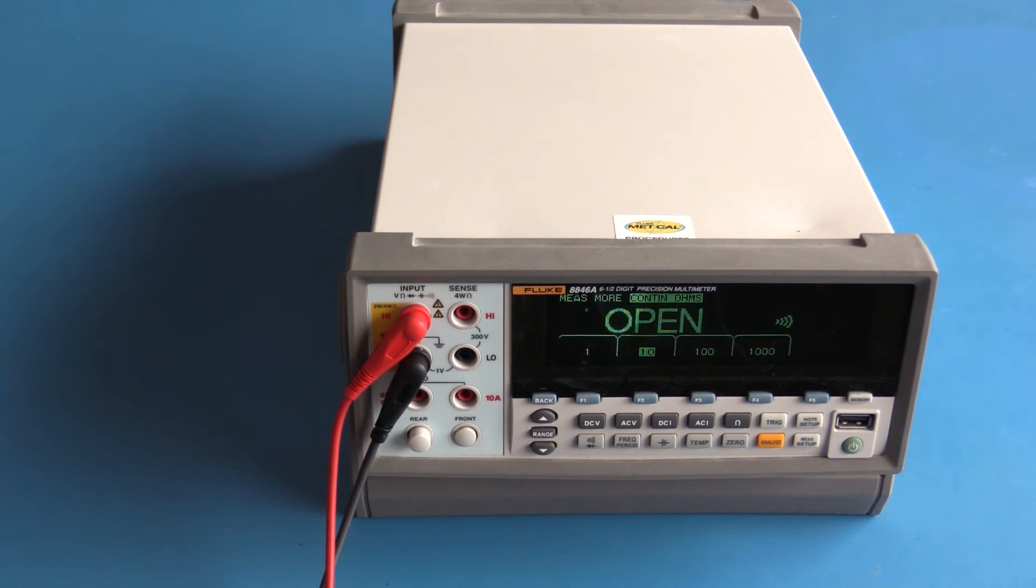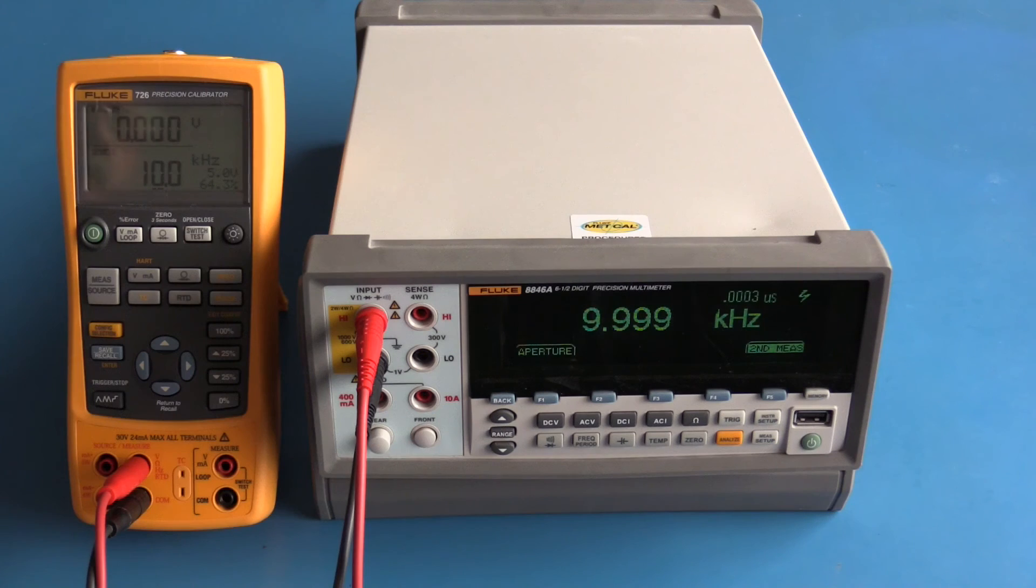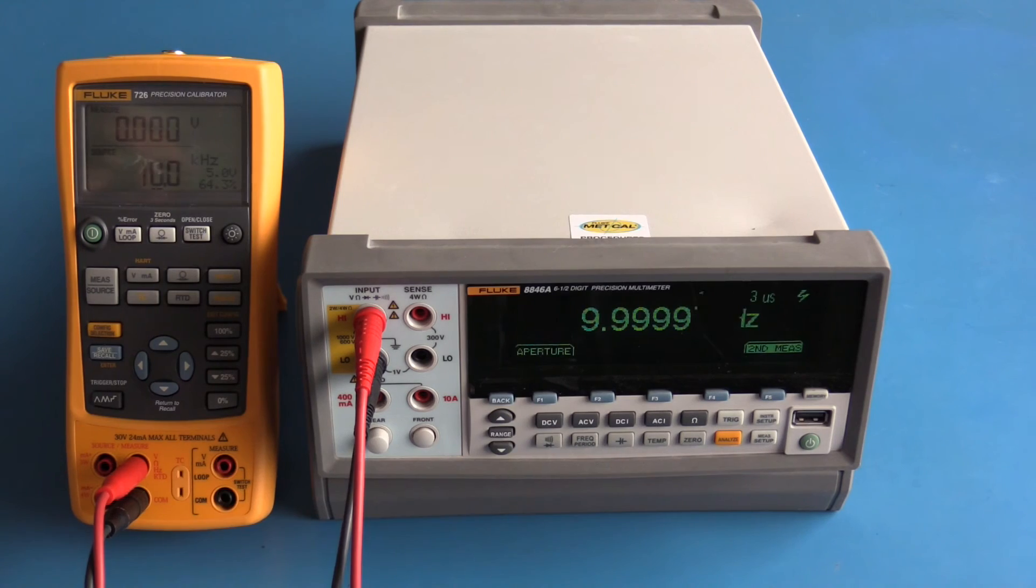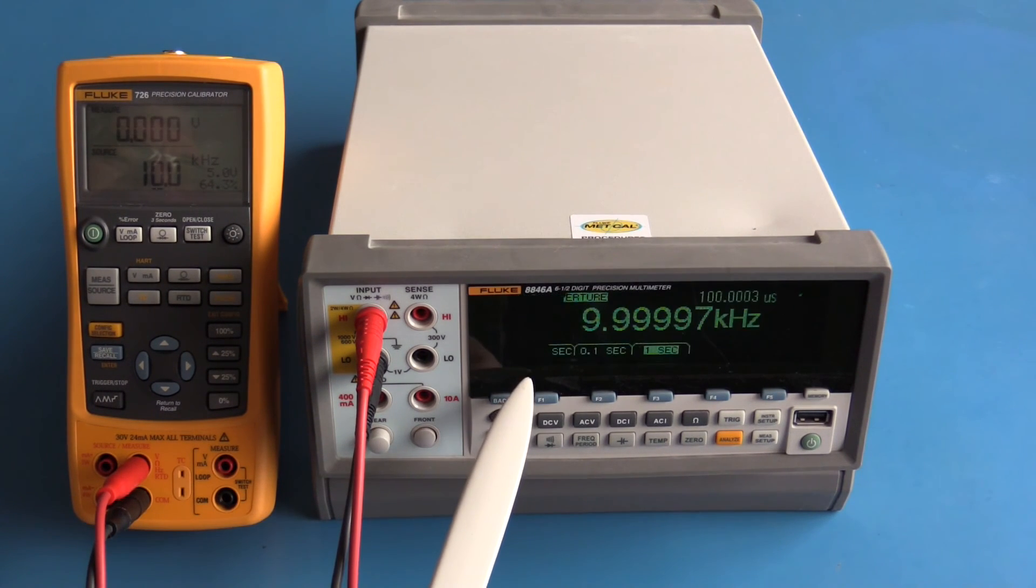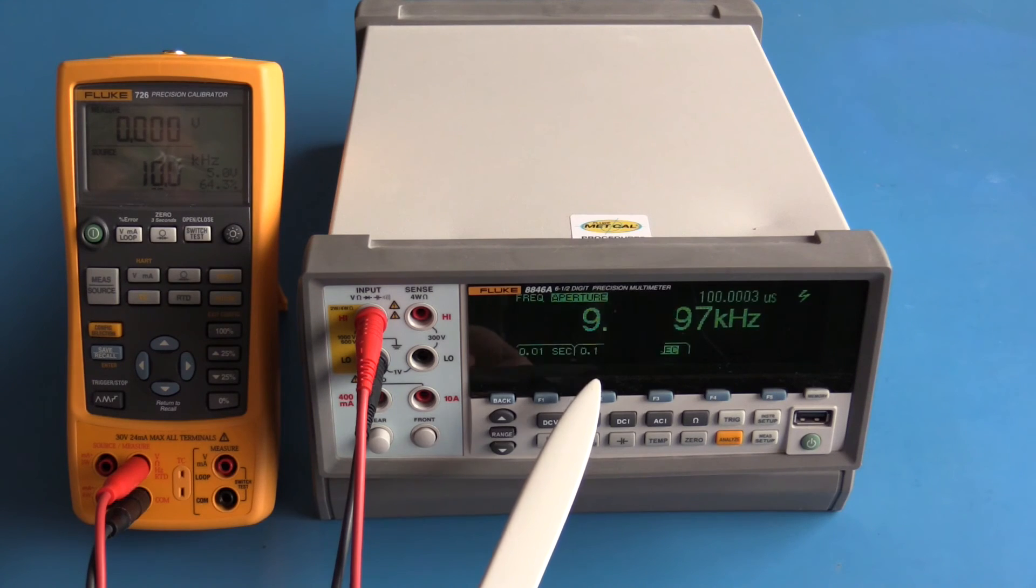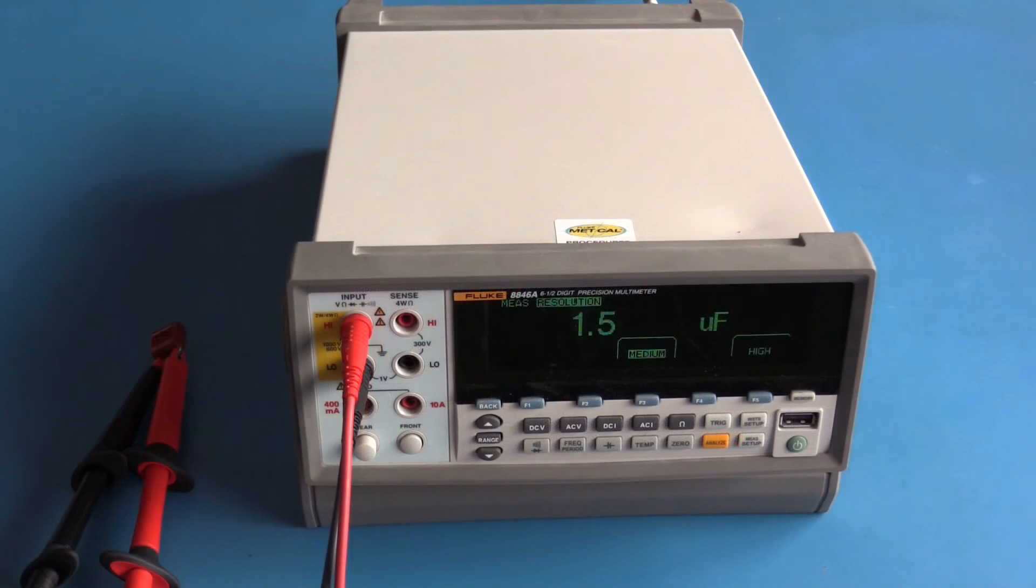Now looking at frequency. The Fluke 726 is set up to generate a 10 kilohertz square wave, 5 volt peak to peak. We're reading approximately 10 kilohertz. The second measurement function is showing 100 microseconds for the pulse width. We do have the ability to change the aperture. The aperture setting can be 10 milliseconds, 100 milliseconds or one second.